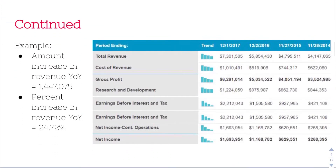In this example — the most recent year shown is 2017 — if we do horizontal analysis of total revenue, first we look at the dollar amount increase year over year from 2016 to 2017. We take the value in 2017, which was $7,301,505, and subtract the value in 2016, which was $5,854,430. That gives us an increase of $1,447,075 year over year from 2016 to 2017.